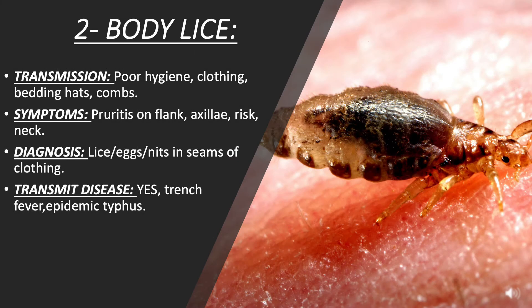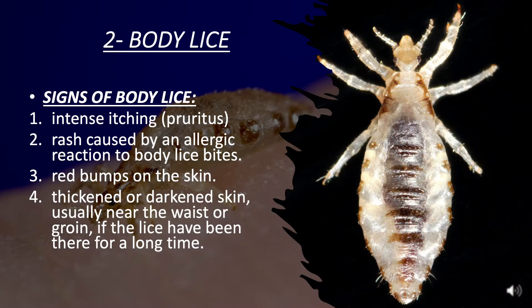Body lice: Transmission is through poor hygiene, clothing, bedding, hats, and combs. Symptoms include pruritus on the flanks, axilla, and neck. Diagnosis is by finding lice or nits in the seams of clothing. Signs include intense itching, rash caused by an allergic reaction to bites, red bumps on the skin, and thickened or darkened skin usually near the waist or groin if the lice have been present for a long time.